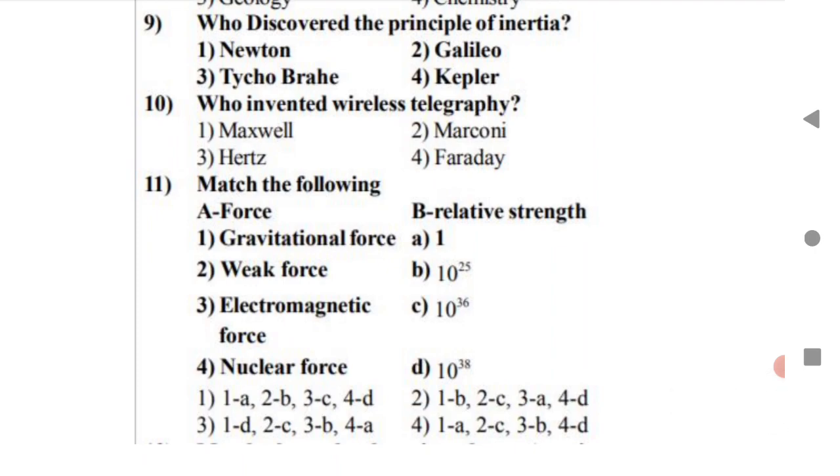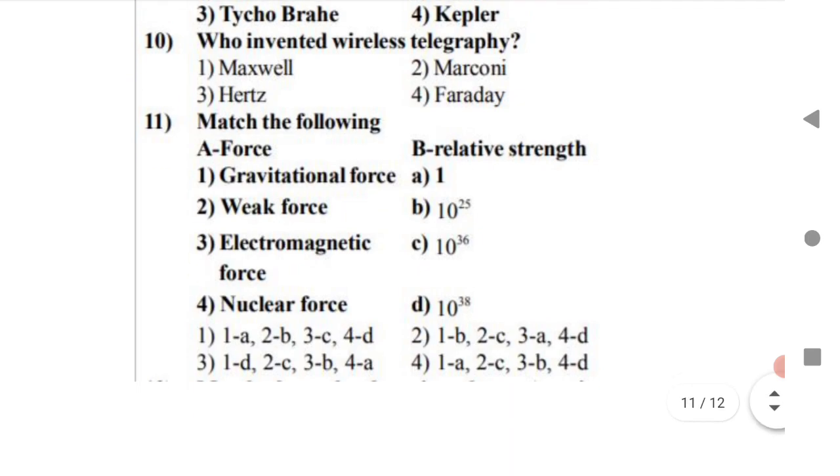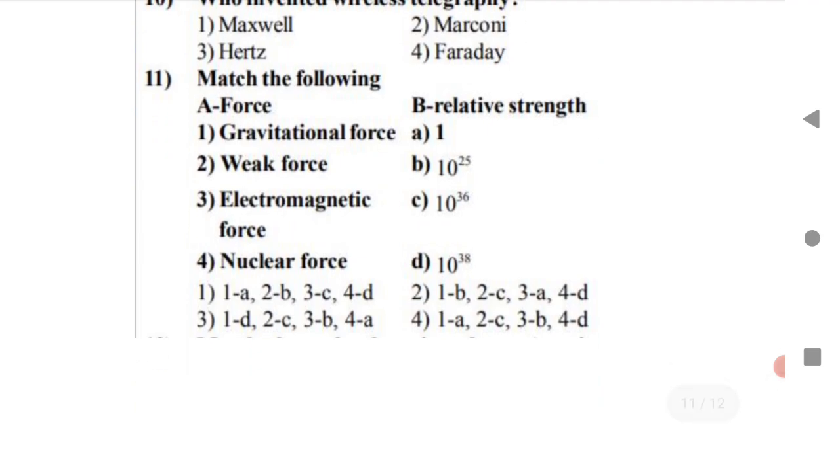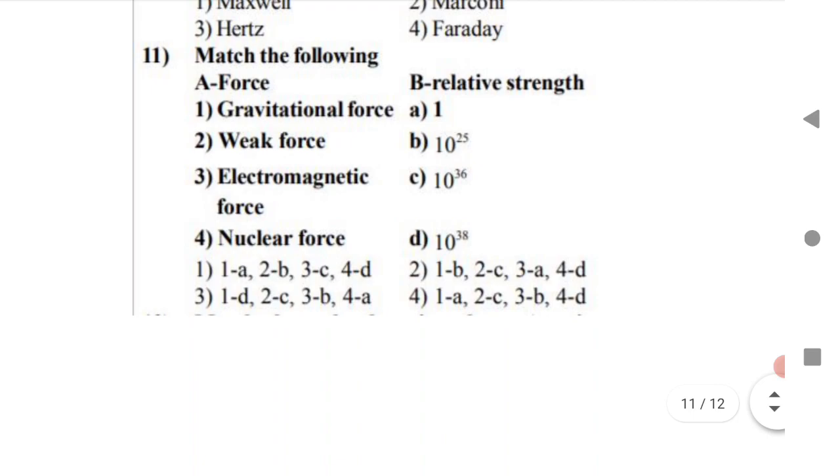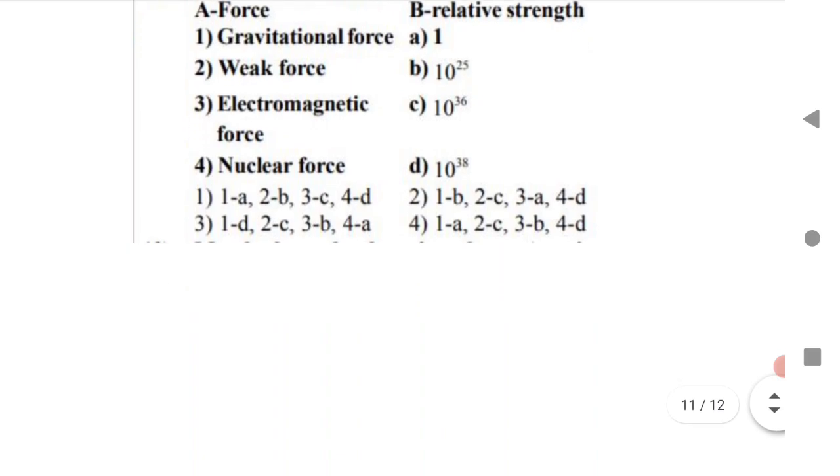Match the following. Gravitational force is option A. Weak force is 10 to the power of 25. Electromagnetic force is 10 to the power of 36. Option one is A, option two is B. Electromagnetic force is 10 to the power of 36. Nuclear force 10 to the power of 38. That is the option is one.